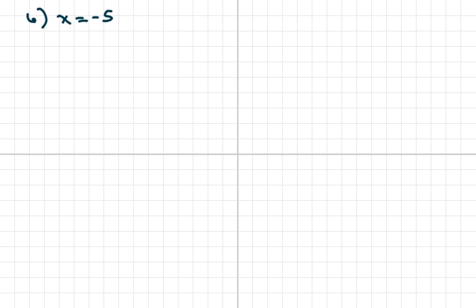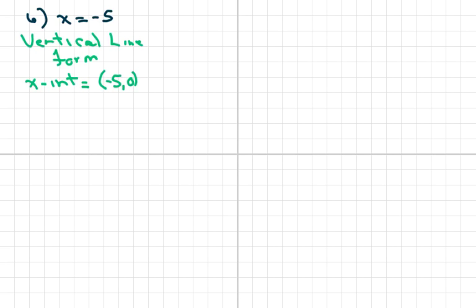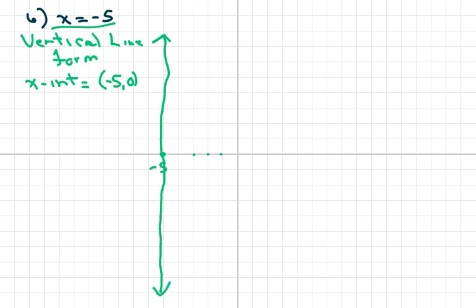One more — this is your vertical line form. This is not a function. All you're going to know is your x-intercept equals negative 5. We go to negative 5 on the x-axis and draw a vertical line. Please know these forms — the vertical and horizontal line forms are important. Part 2 is going to be the same thing with just different equations. Thank you and have a nice day!